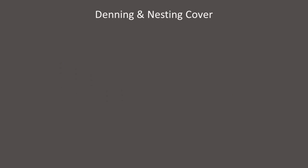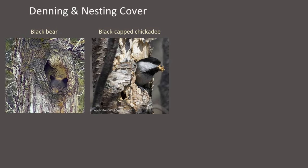Many wildlife species have specific requirements for structures that allow them to hide their nest or to den. If these structures are not present, the wildlife species will not be present or they will not be able to breed successfully. For example, many birds and mammals require standing dead or alive trees with cavities for nesting or denning.